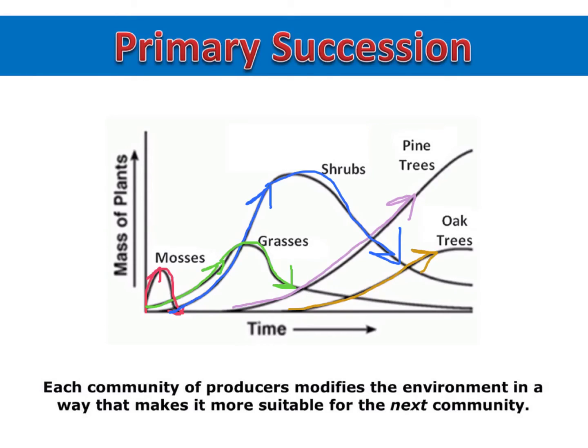Each community of producers modifies the environment in a way that makes it more suitable for the next community.